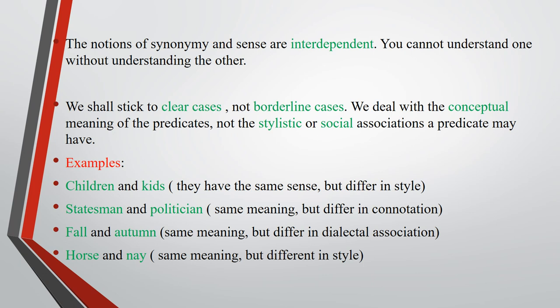For example, 'children' and 'kids' are synonyms, but they differ in style — they have the same meaning but one is formal ('children') and one is informal ('kids'). 'Statesman' and 'politician' have the same meaning but differ in connotation. 'Fall' and 'autumn' have the same meaning but differ in dialectal association — 'fall' is used in American English and 'autumn' in British English. 'Horse' and 'nay' have the same meaning but differ in style.